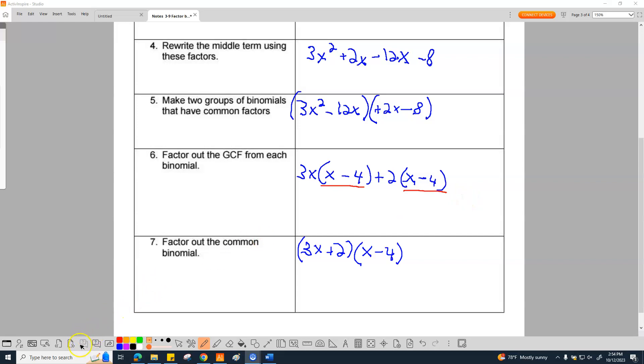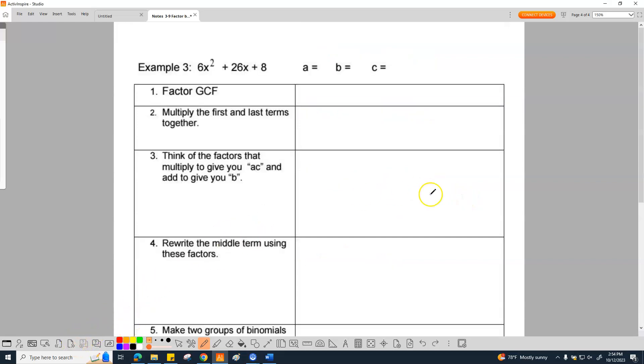All right, let's go ahead and do example three. Check it out. This seems fun. Let's go ahead and get into this. Let's start by labeling our A, B, and C. So you are responsible for knowing this information. A is going to be 6, B is going to be 26, and C is going to be 8.